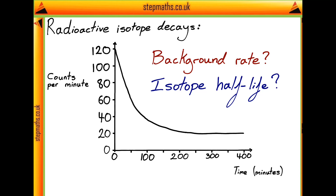To find both of these, we should go ahead and look at our graph. The easiest to find is probably the background rate — this is the rate due to background radiation and not due to our isotope. To find it, we can look at our graph after a large amount of time. After a large amount of time, our isotope should have decayed to the point where its activity is negligible. Therefore, the only activity left should be due to the background radiation. We can see that our graph approaches a count rate of 20, and therefore our background rate is 20 counts per minute.